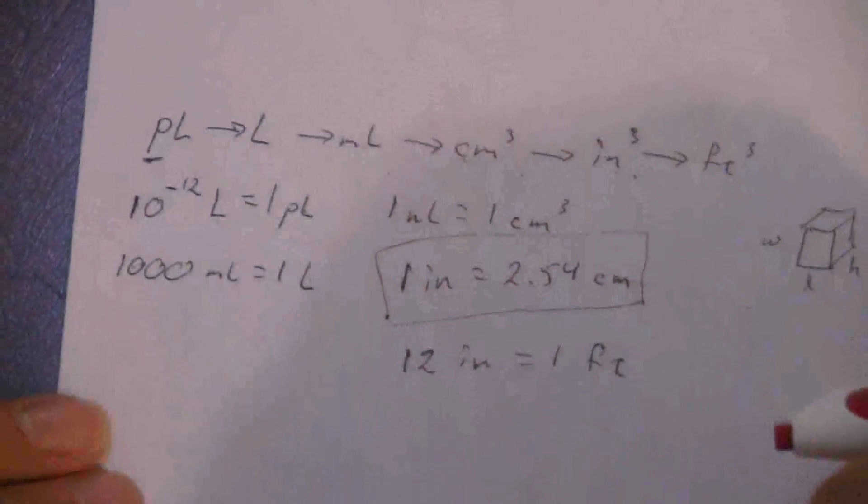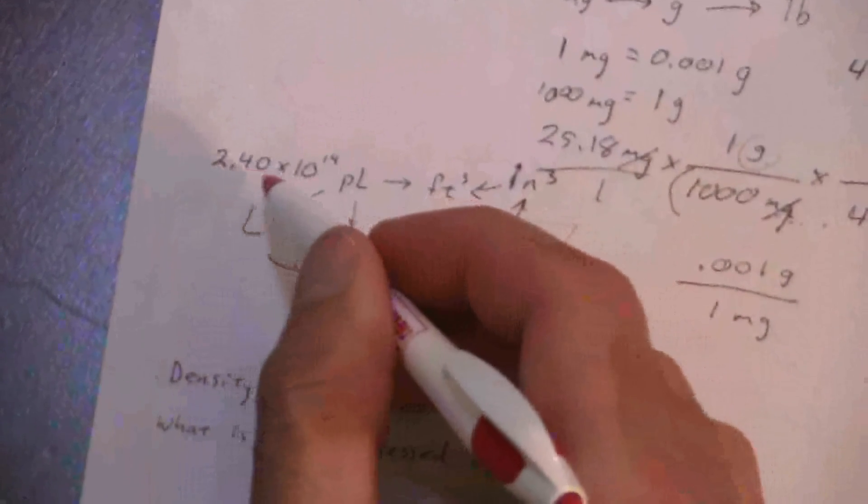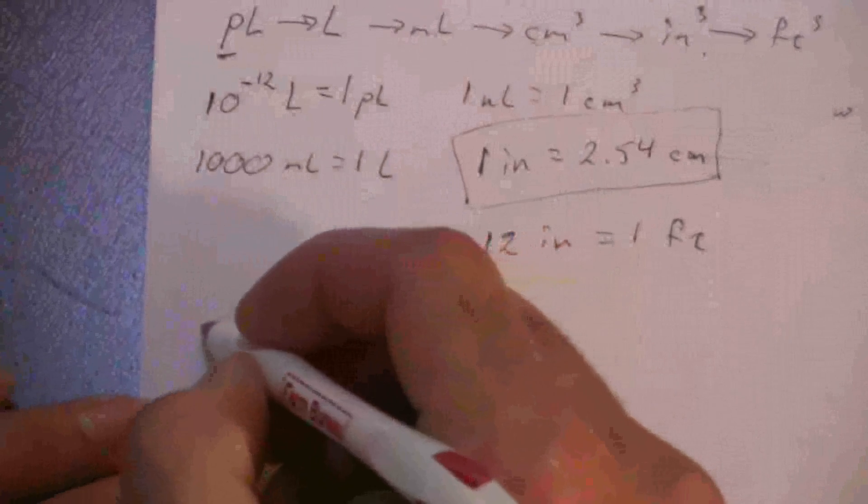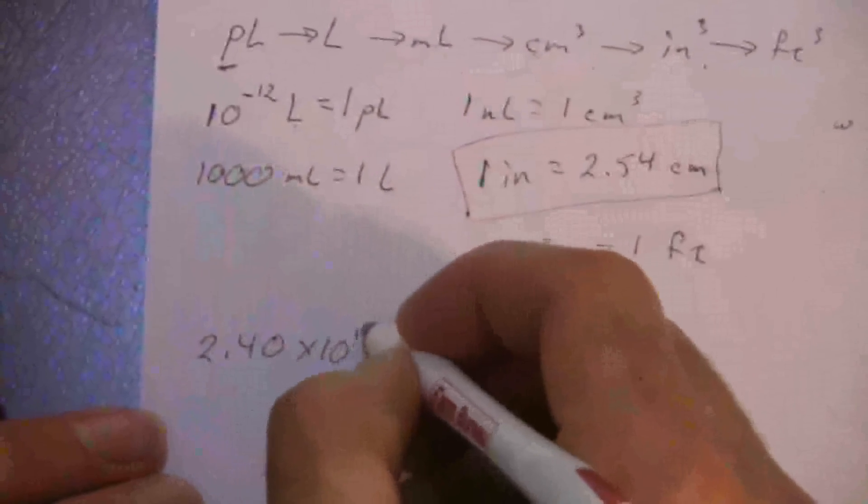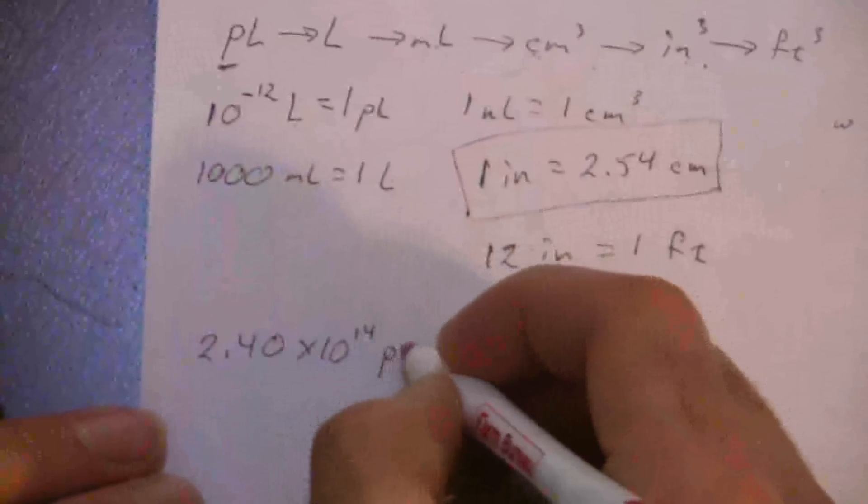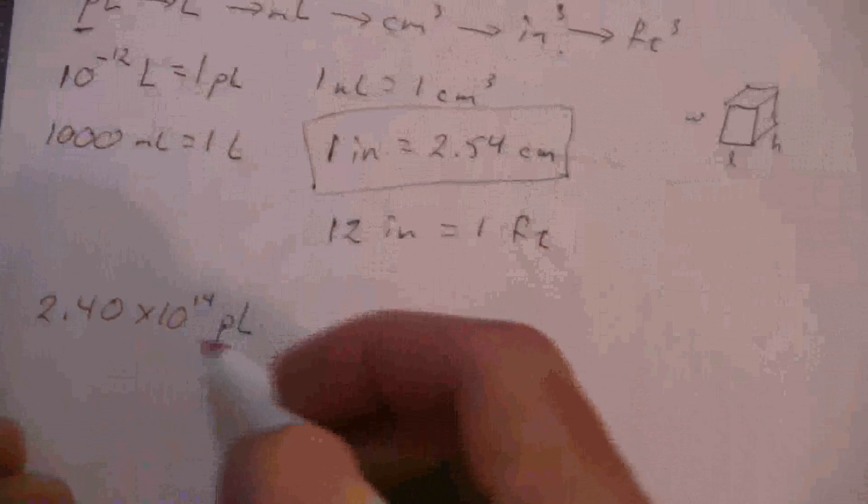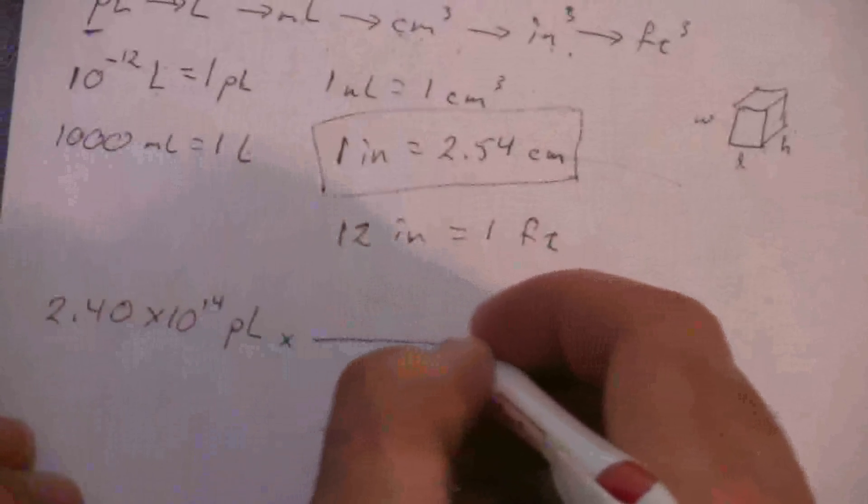All right, so let's write this out and see what we get. The actual number that we had was 2.40 times 10 to the 14th, and that was picoliters. So that's my engine, if you will. That's what I'm starting with, starting the train off.